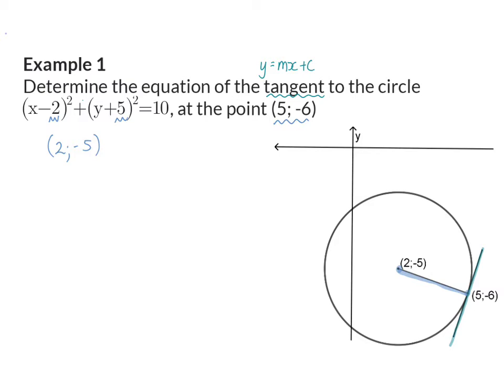I'm going to start off by calculating the gradient of my radius by substituting into my gradient formula. So it's -5 minus -6 divided by 2 minus 5, and this will give me a gradient of minus a third.